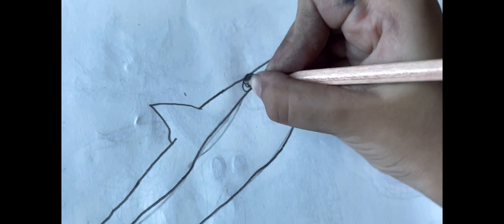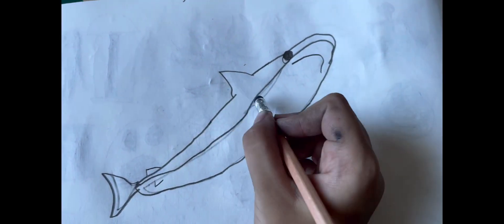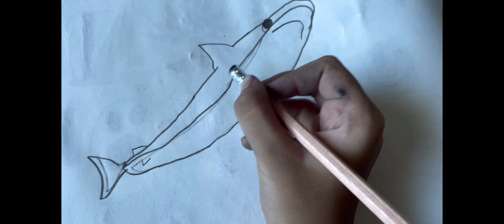Make its pupils like really big because sharks have eyes like that. And now on this side, draw like... hold on, that eye is a bit sauce, a bit weird.